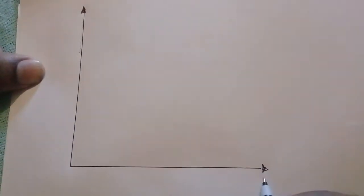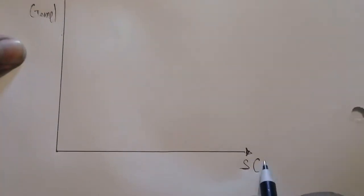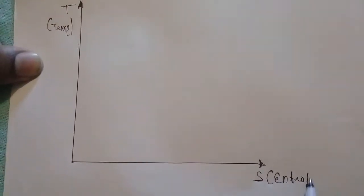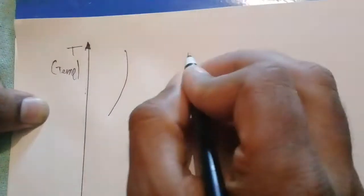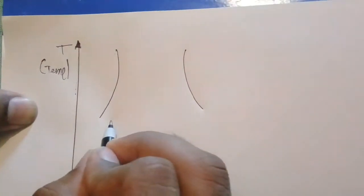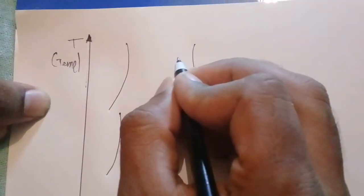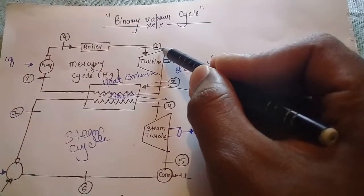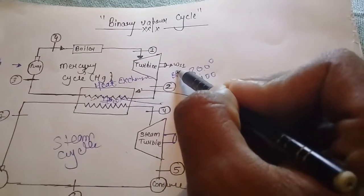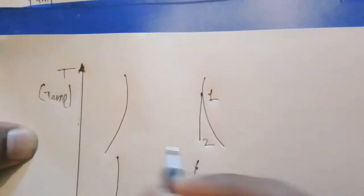This is a T-S diagram — T is temperature and S is entropy. For the mercury cycle and for the water cycle, from 1 to 2 is the turbine work. As you can see here, from 1 to 2 is the turbine work where we get WS1, so 1 to 2 is the turbine work.